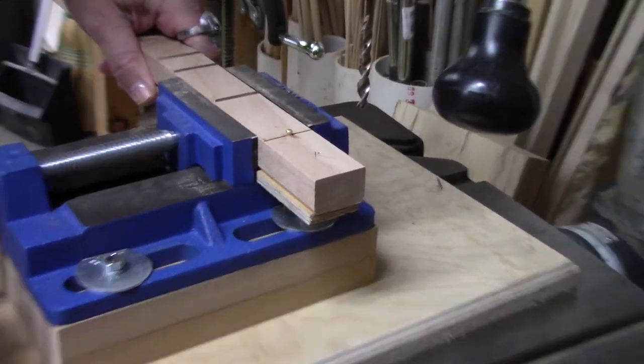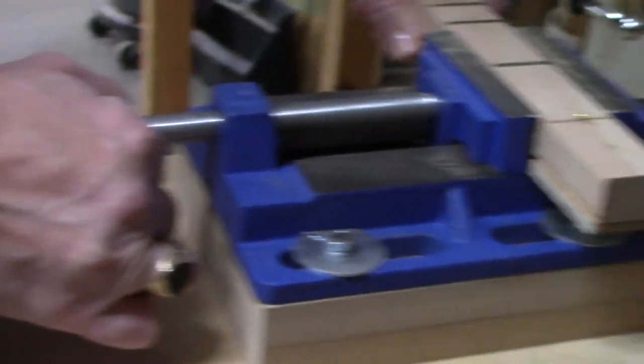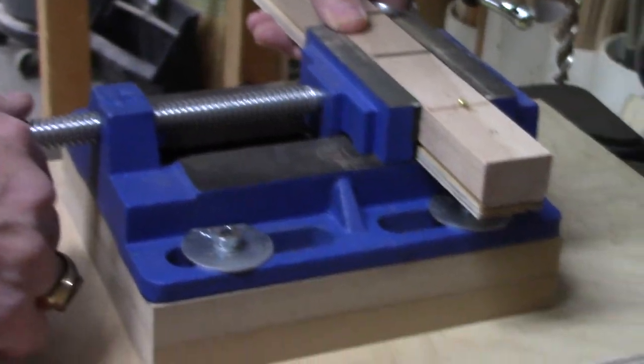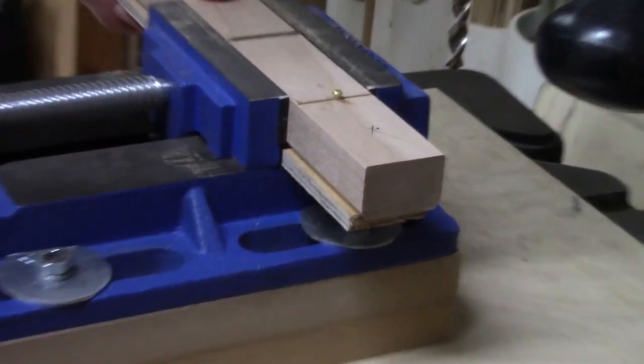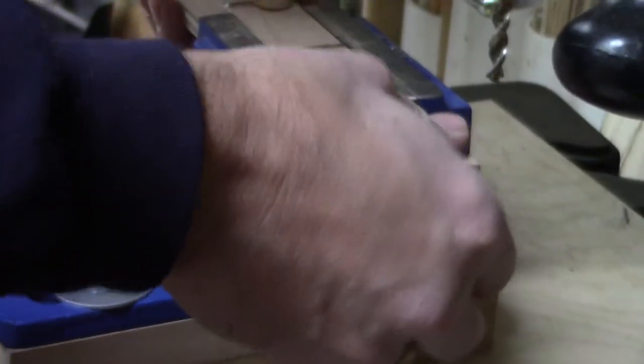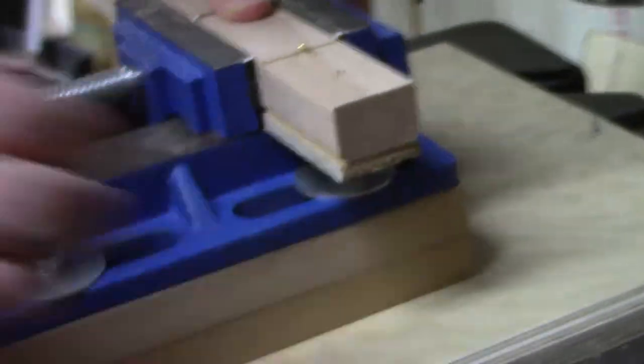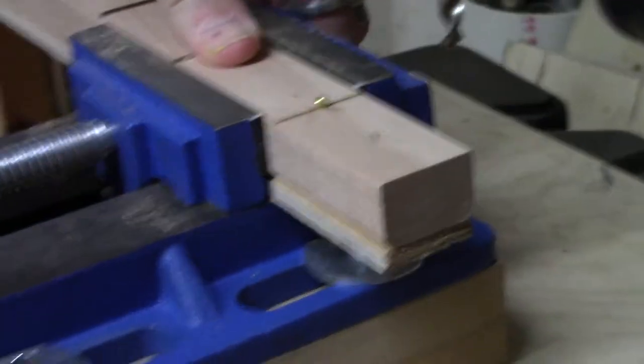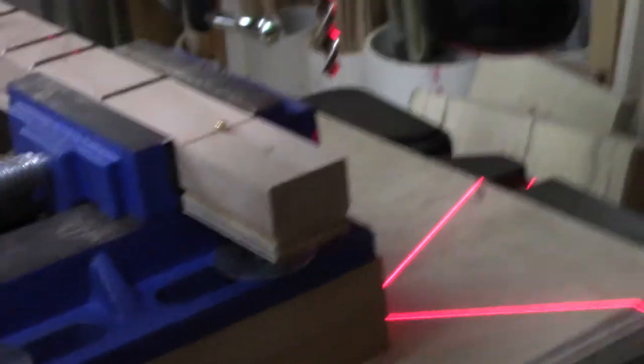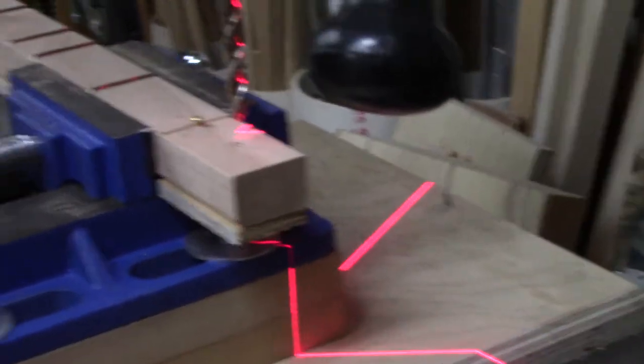And you want to clamp this vise. Not super tight because you don't want to dent the wood or crush it. And make sure your backer board is in position as well. And then with this size drill bit, you can probably use that laser.